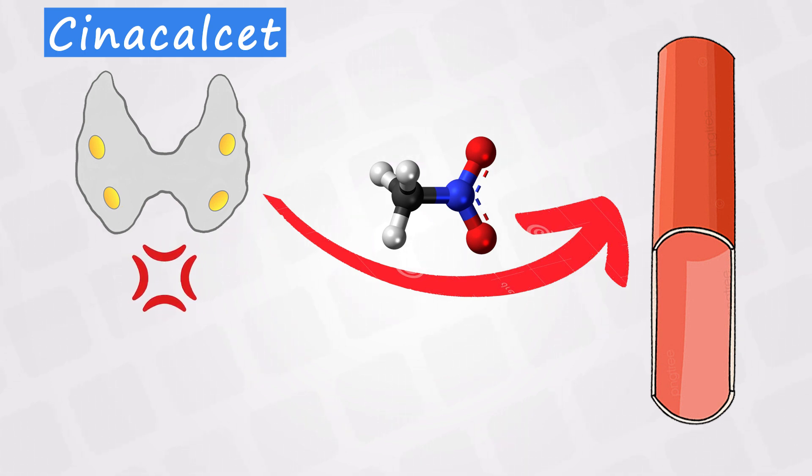So if the calcium levels are normal or even a little bit low, it will sense that this calcium level is very high and it will decrease the production of parathyroid hormone. And of course, this results in hypocalcemia, which is the main side effect of this medication.